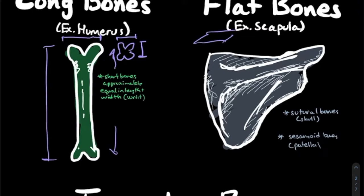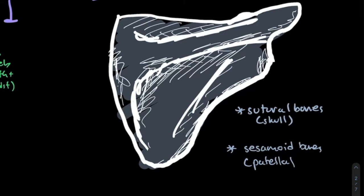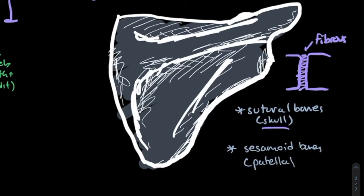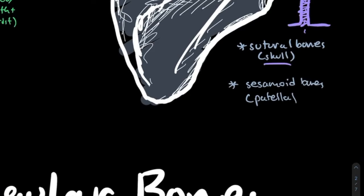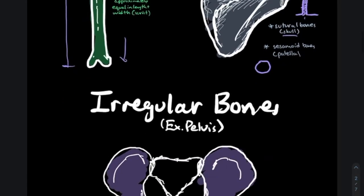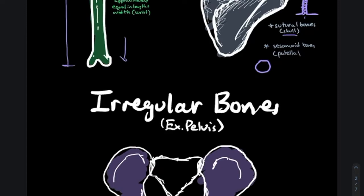A couple of extra things about flat bones: we have sutural bones, which are the bones that actually comprise the skull. The skull is made up of a variety of different bones with joints in between them. As you grow up, these bones start to fuse, forming fibrous joints. These joints are immovable, and the connection points between them are called sutures — that's where the term sutural bones comes from.